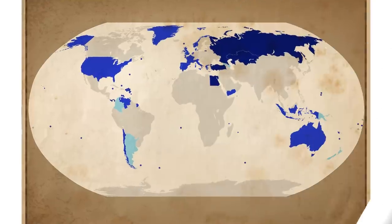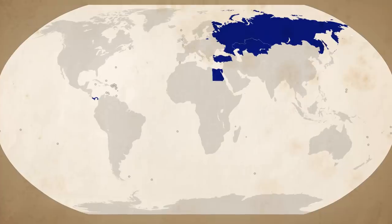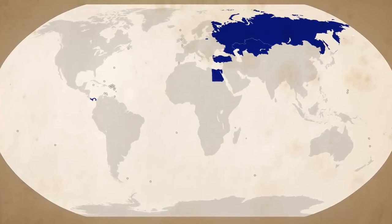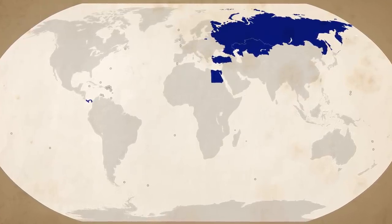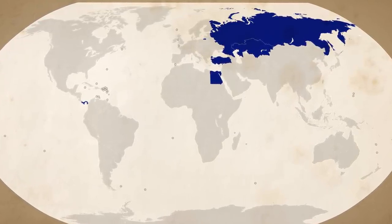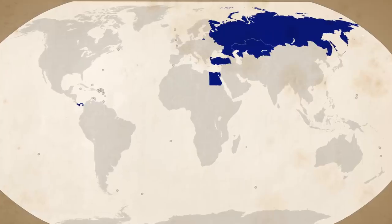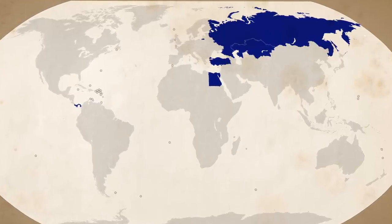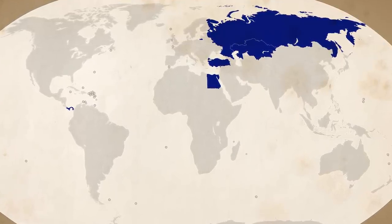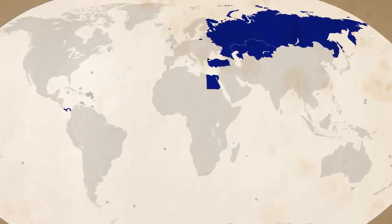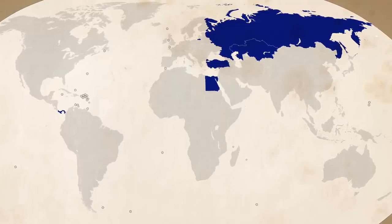This map illustrates these differences well. The ones in darker blue are the true transcontinental nations in the absolute sense of the word, meaning their contiguous territory goes across two continents. There are only a reduced number of them in the world: Panama, Egypt, Turkey, Russia, and Kazakhstan — at least according to this.